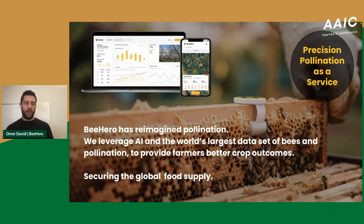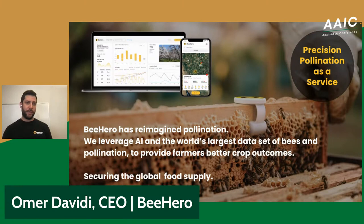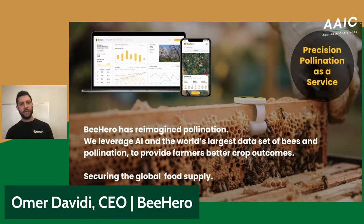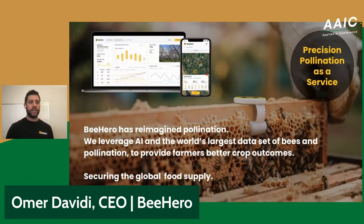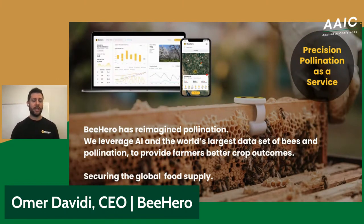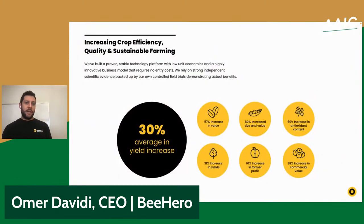It's been a long process, but we've collected tons of data — we now have 100,000 hives under management, though we started with a few hives at my co-founder's backyard. Eventually we reimagined the way pollination is provided today. We decided not to focus only on one part of the value chain, but to build a holistic solution servicing both beekeepers and farmers. What we provide now is precision pollination as a service.